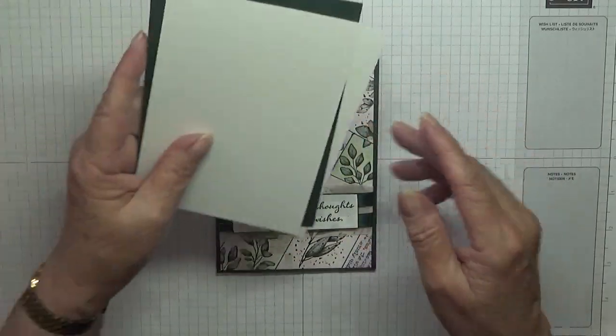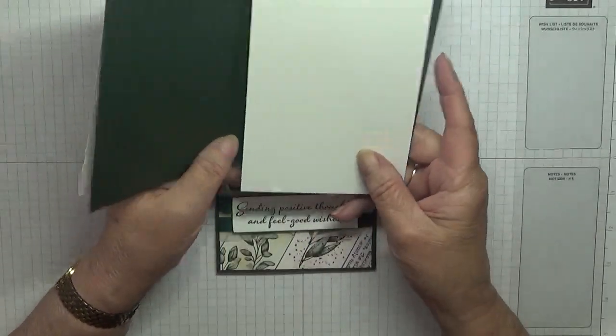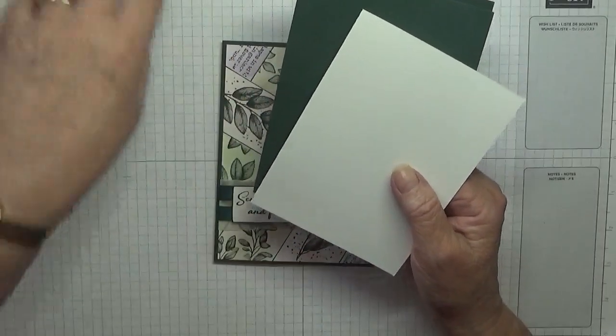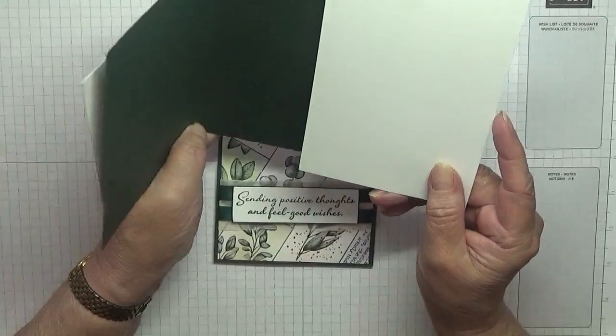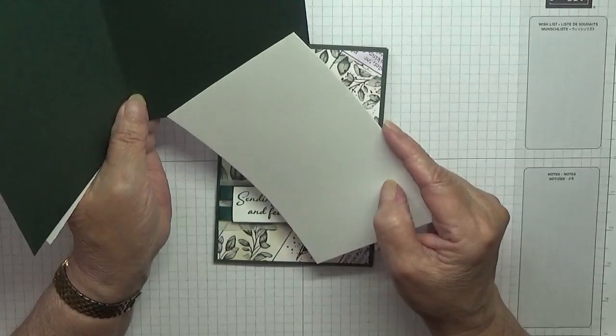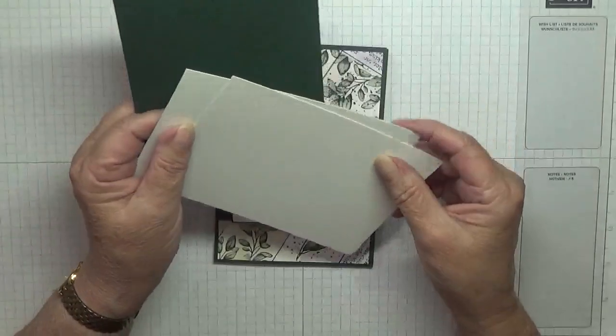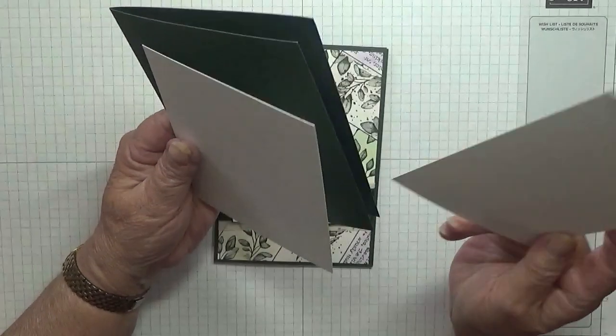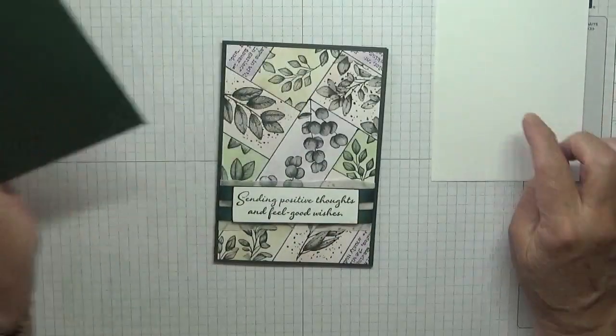To start, I've got an Evening Evergreen card base of eight and a quarter by five and seven-eighths, scored at four and one-eighth, folded in half, and two pieces of basic white at five and five-eighths by three and seven-eighths, one for the inside and one for the outside.